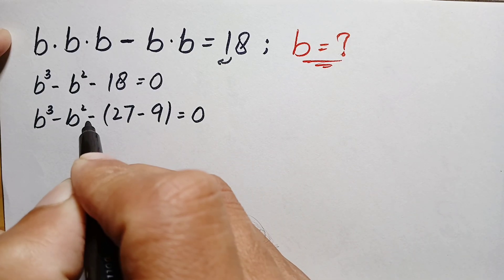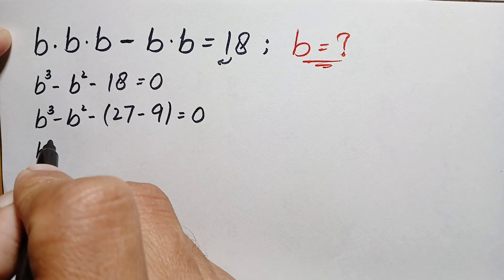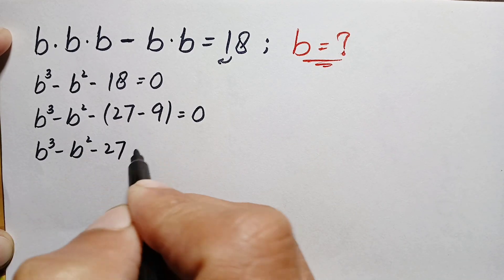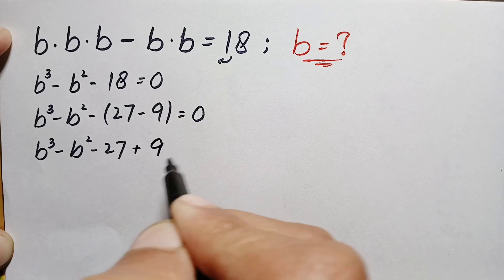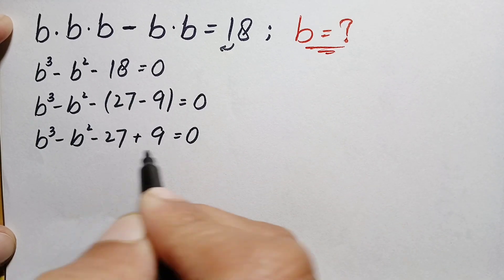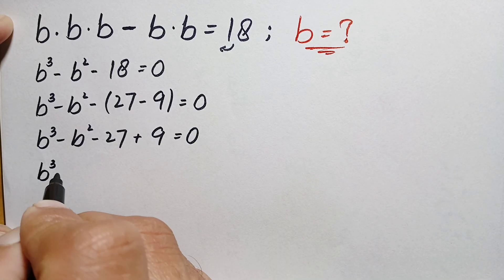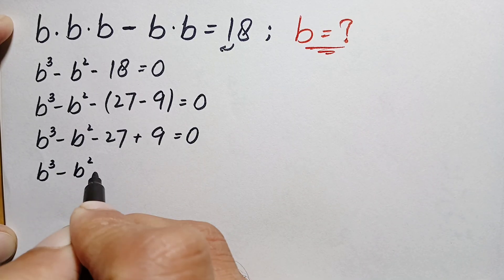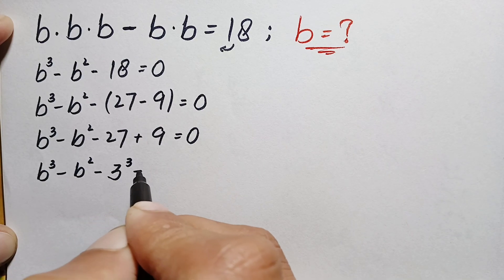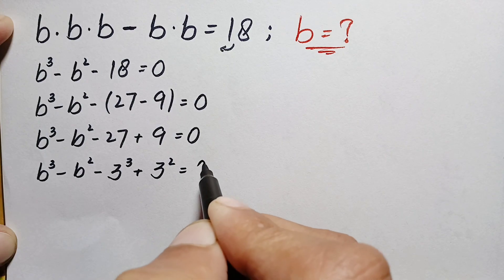Multiplying the negative sign inside the parenthesis, this becomes b cubed minus b squared minus 27 plus 9 equals 0. We can write the two constant numbers as: 27 is the same as 3 cubed, and 9 is 3 squared, giving b cubed minus b squared minus 3 cubed plus 3 squared equals 0.